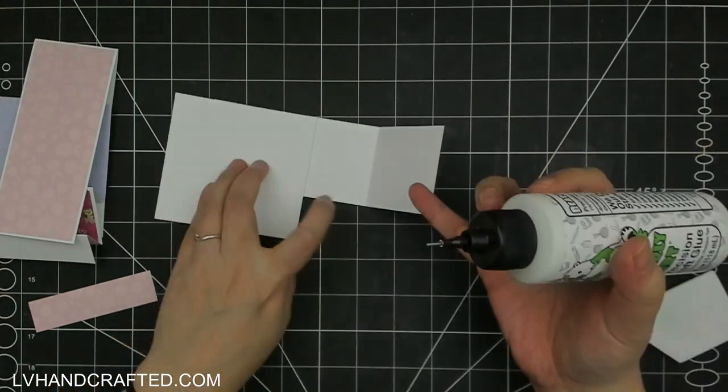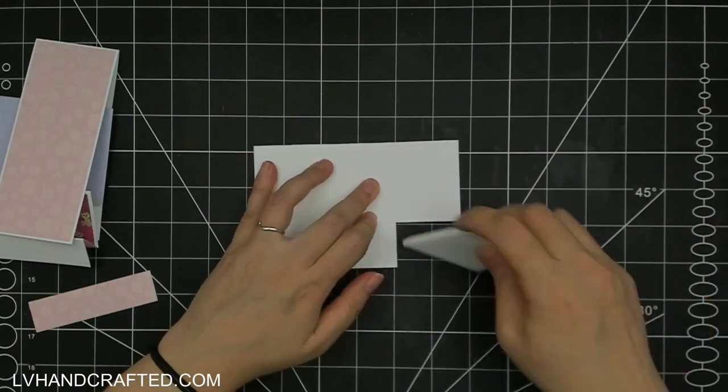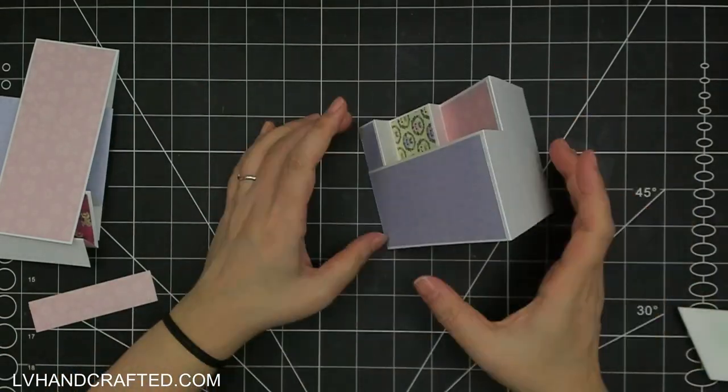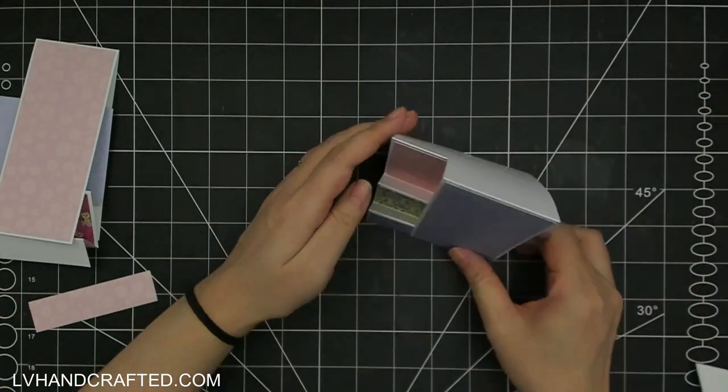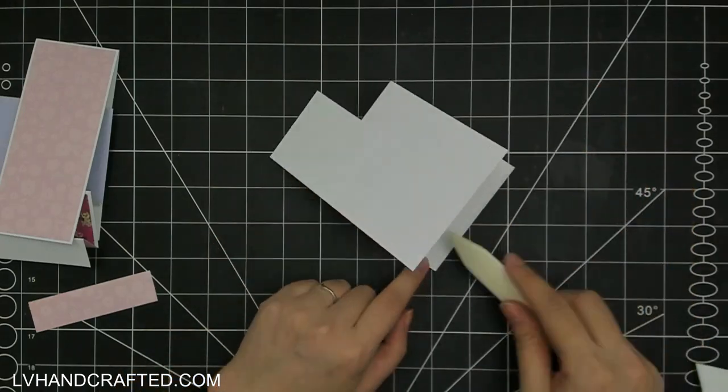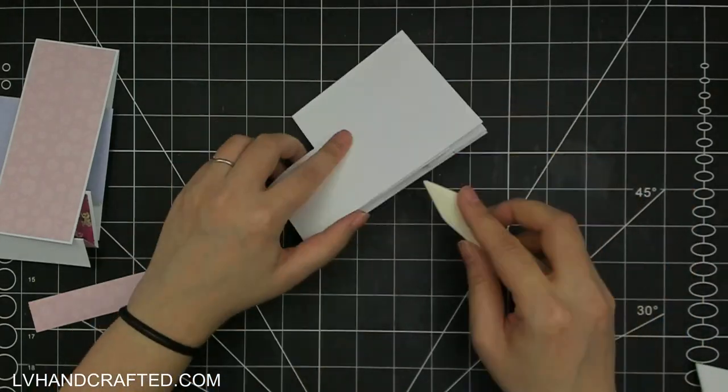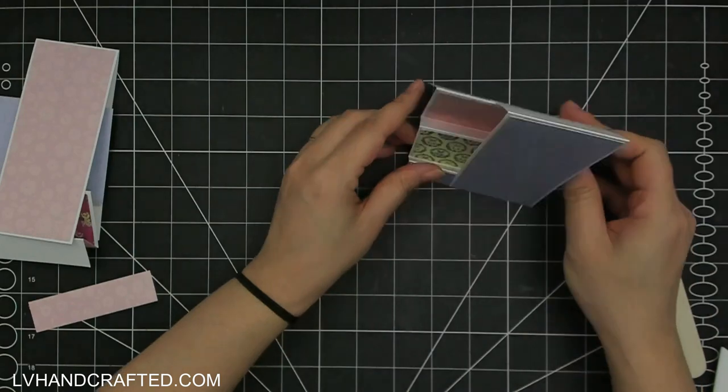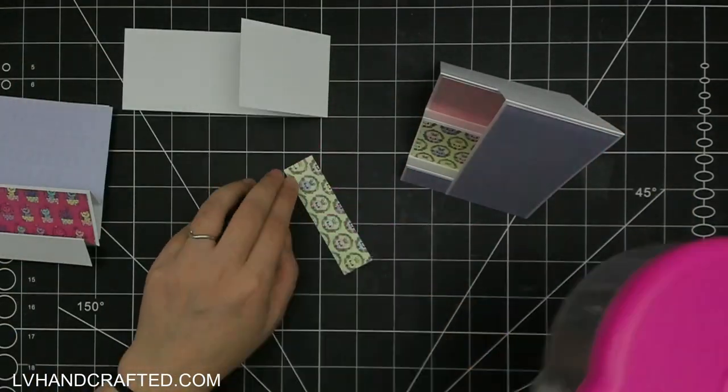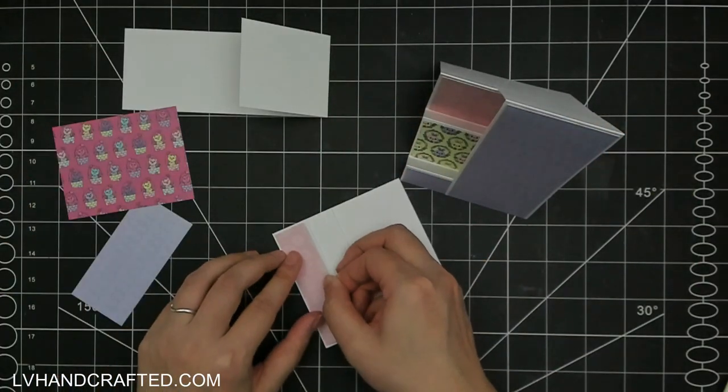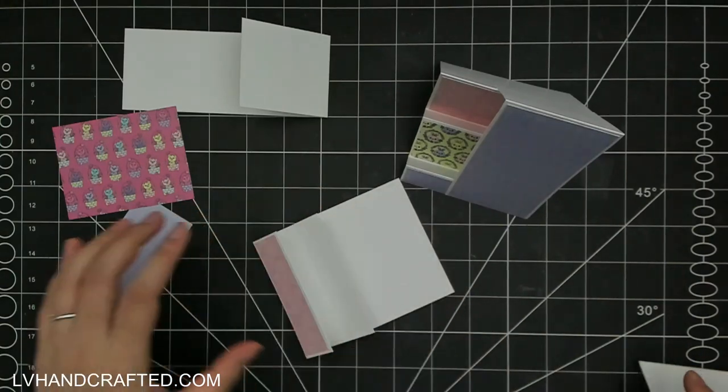And when you go to attach this, all you want to do is just attach your tall stepper where it overlaps with your card base. You don't want to on the back as well as on just that front most step. So I'll show that again. So now I'll attach my pattern papers to each of my steps first.